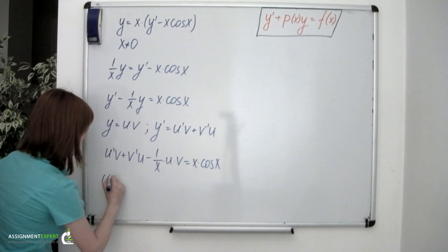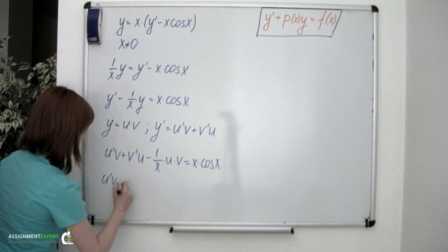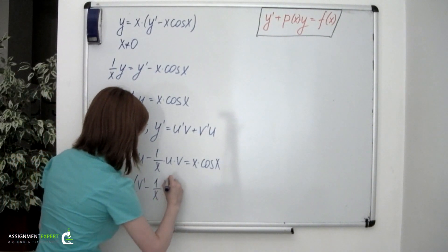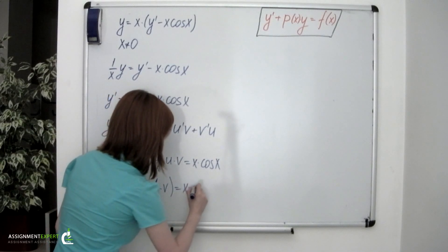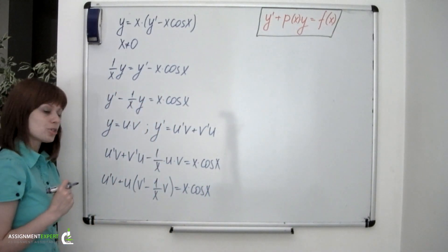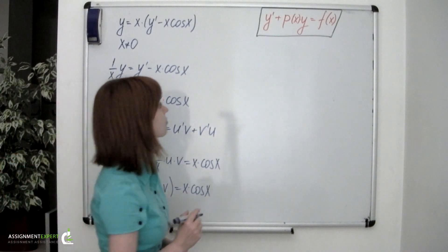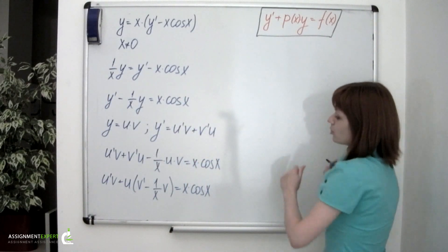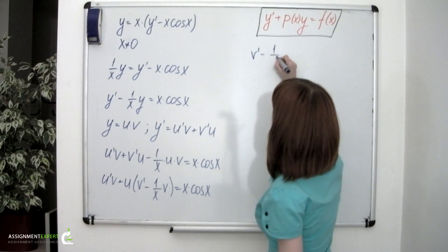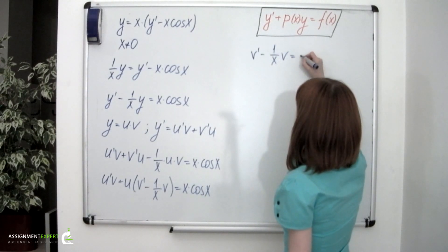We can factor out u on the left, and so we'll have u'v plus u times (v' minus 1 over x times v) equals x times cosine of x. We're choosing the v function such that the expression within these brackets equals 0. That's our next equation to solve: v' minus 1 over x times v equals 0.